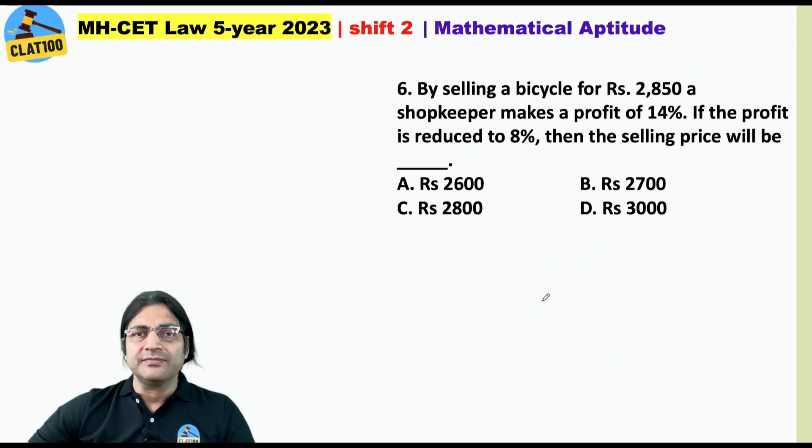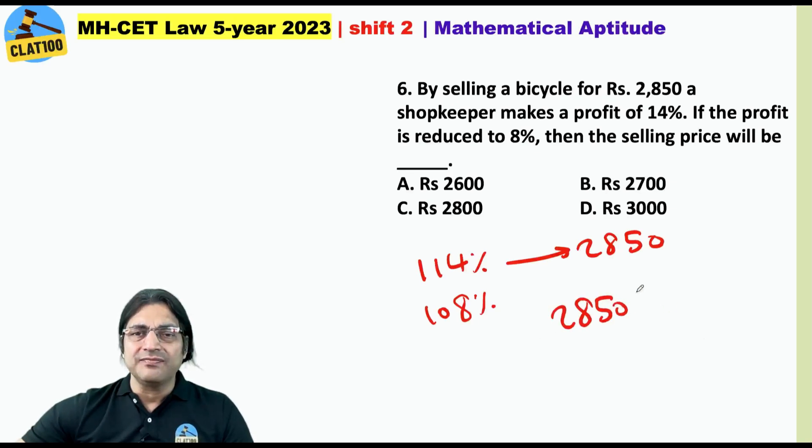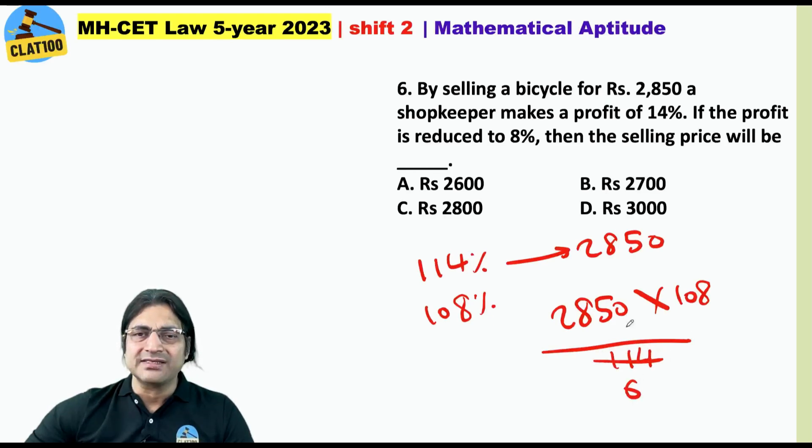There is another way. At a profit of 14%, the selling price is 2850. Profit of 14% means 114% of the cost price gives you 2850. But we want the selling price at a profit of 8%, that is 108% of the cost price. So the answer would be 2850 into 108 divided by 114. This gives 25 into 108, that is 2700.